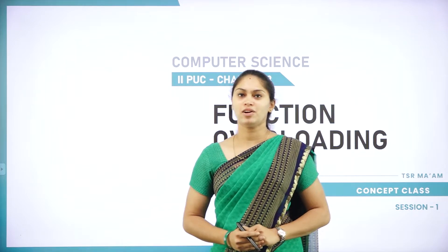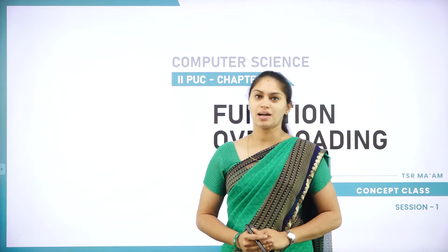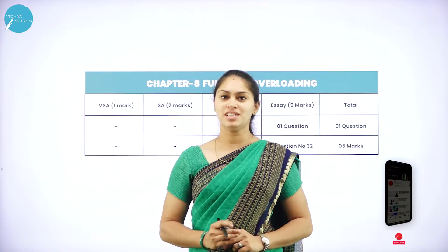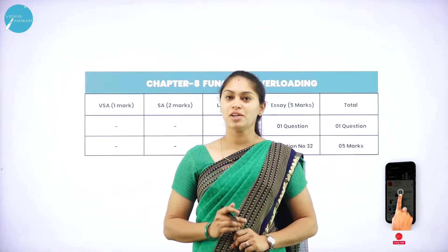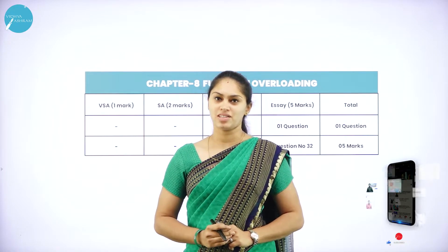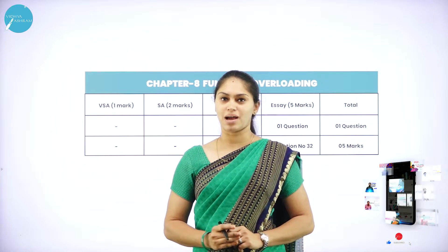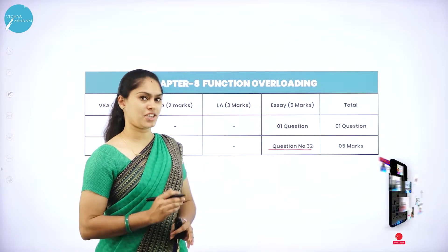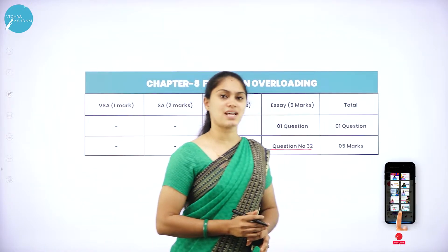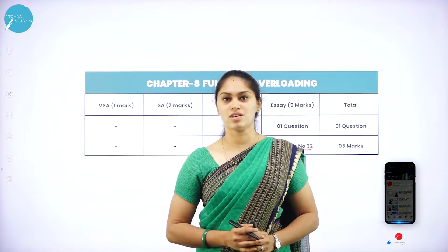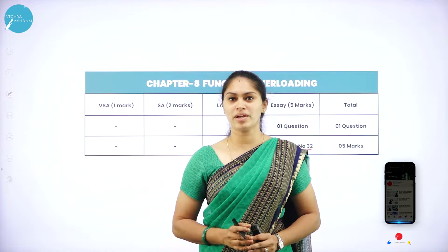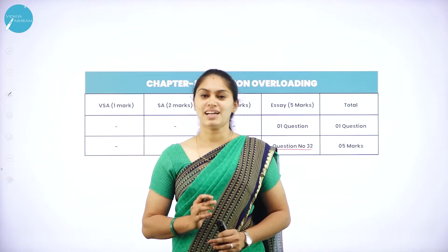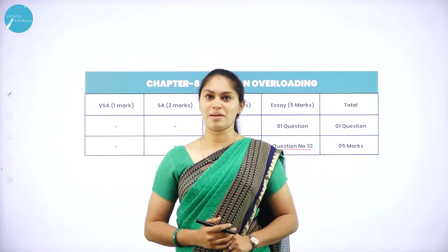It's the eighth chapter of second PUC's computer science. Coming to the blueprint of this chapter, you are going to get one 5-marks question from this chapter. In your question paper, question number 32 will be from the chapter function overloading, so totally you are going to get only one question from this chapter, that is for 5 marks.